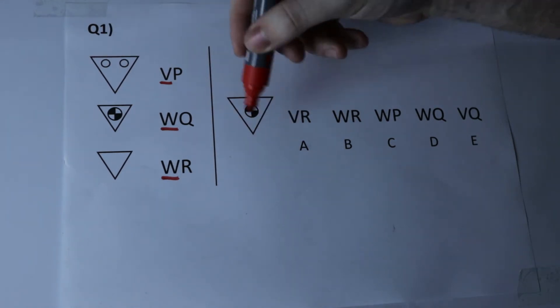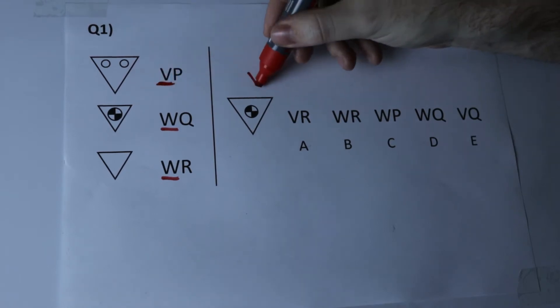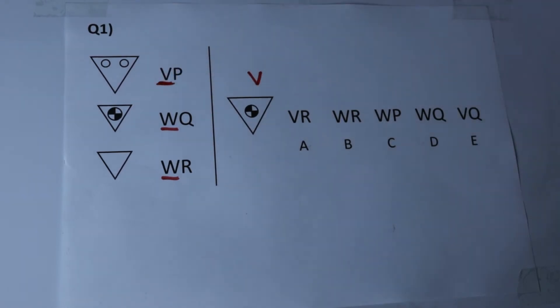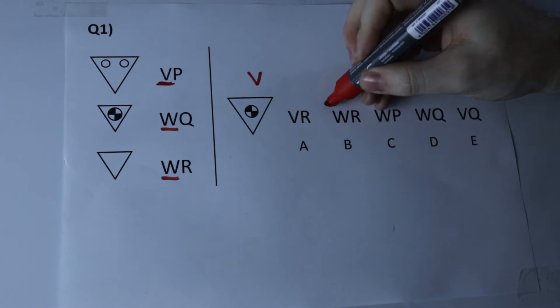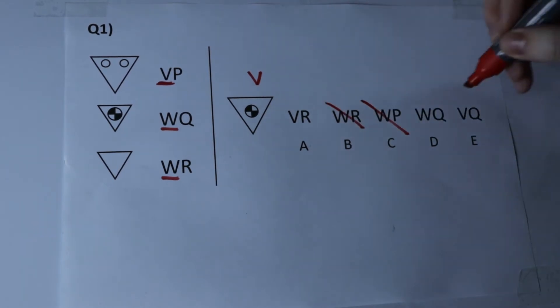This here is a larger triangle therefore the first letter must be a V and what we can do straight away is eliminate the wrong answers. It's not WR, it's not WP and it cannot be WQ. It must either be A or E.